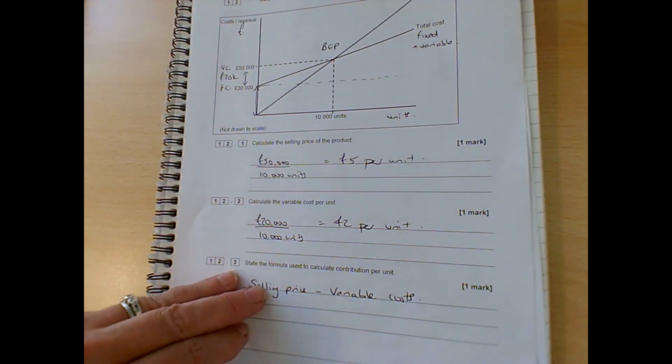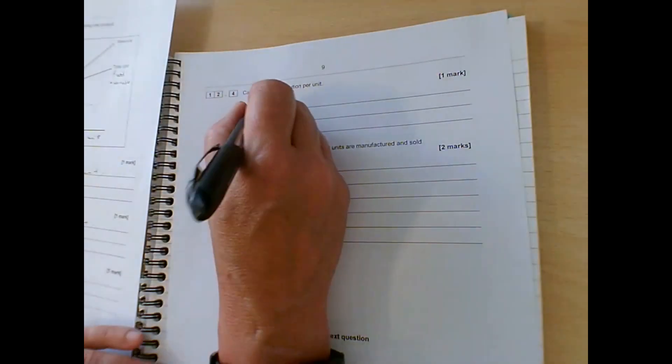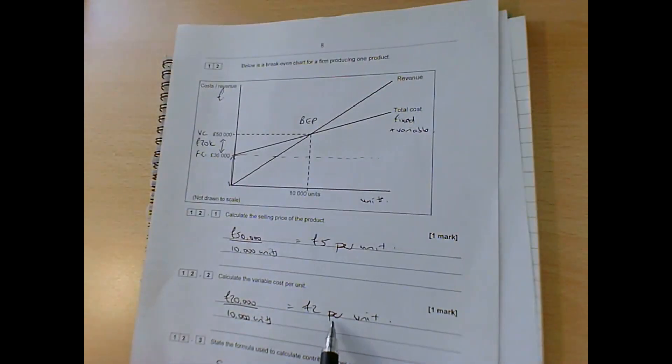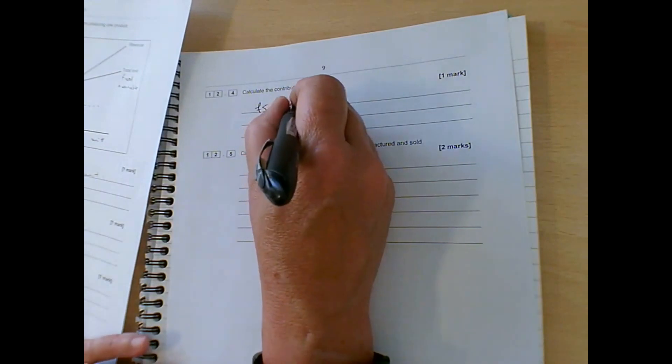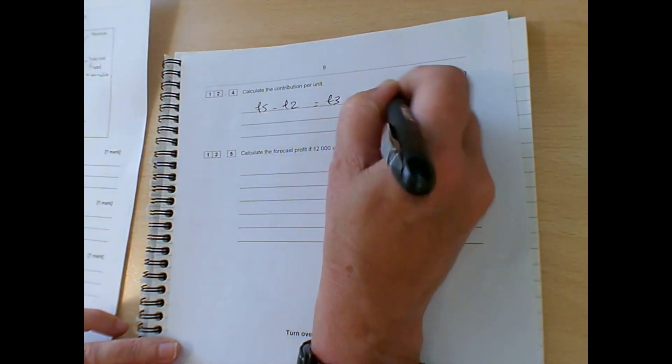And then over the page, we're going to calculate the contribution per unit. So the selling price is £5 minus the variable costs, which we worked out here with £2 per unit, is £3 per unit.